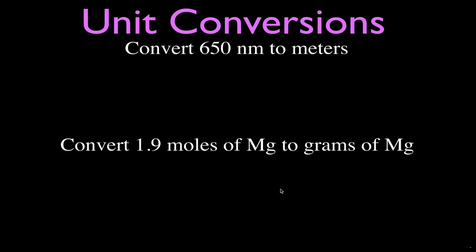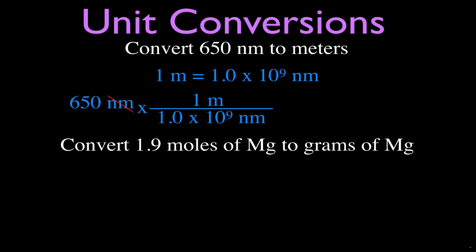Next, convert 650 nanometers to meters. A nanometer is one billionth of a meter, so the conversion factor is: one meter equals 1.0 times 10 to the 9 nanometers. Put nanometers in the bottom, meters on top. Divide 650 by 1.0 times 10 to the 9th, and you get 6.5 times 10 to the minus 7 meters — which is actually the wavelength of red light in the visible electromagnetic spectrum.